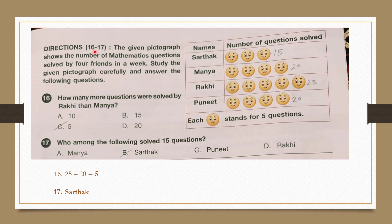Direction for questions 16 and 17: The given pictograph shows the number of mathematics questions solved by 4 friends in a week. Each face stands for 5 questions, giving totals of 15, 20, 25 and 20. Question 16: How many more questions were solved by Raki than Mania? Raki solved 25 and Mania solved 20, so 25 minus 20 equals 5. Our answer is option C, 5.